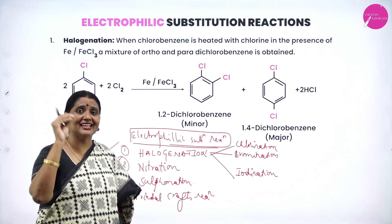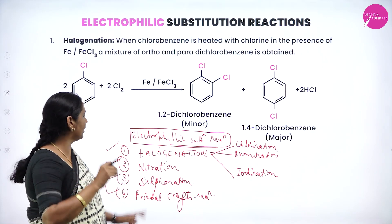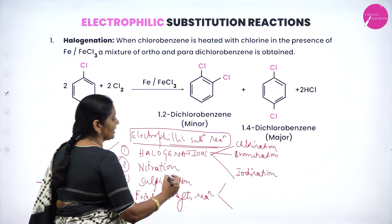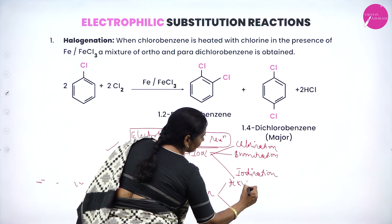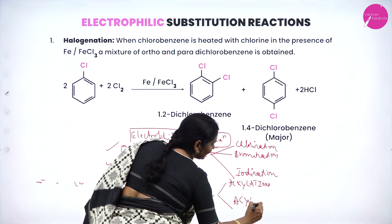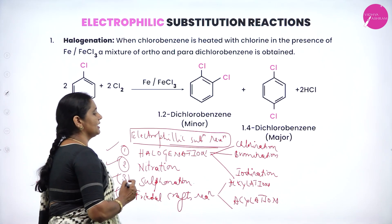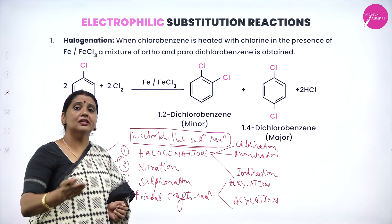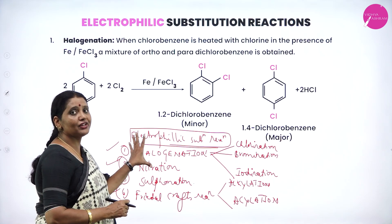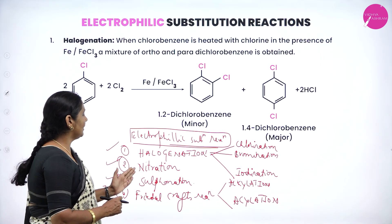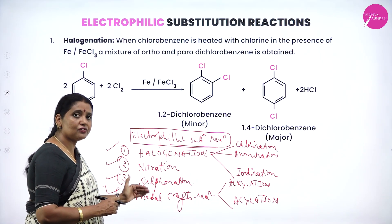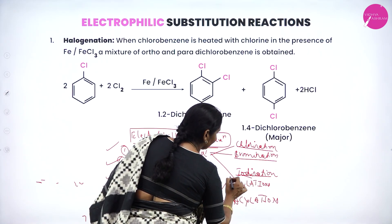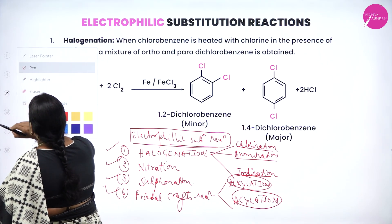Fluorination is not possible due to the highly reactive nature of fluorine. In Friedel-Crafts reaction, there are two types: Friedel-Crafts alkylation and Friedel-Crafts acylation. So under electrophilic substitution: four types — halogenation (chlorination, bromination, iodination), nitration, sulfonation, and Friedel-Crafts (alkylation and acylation).